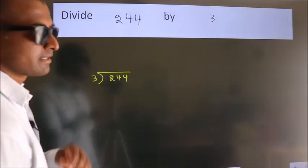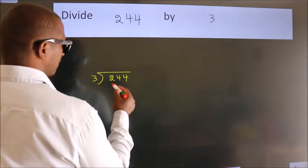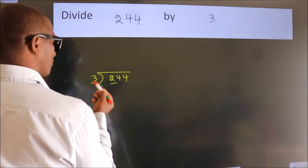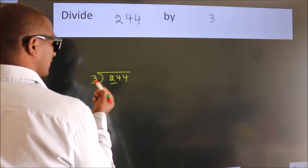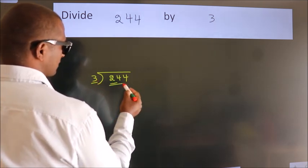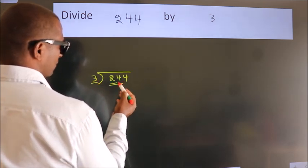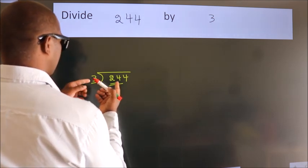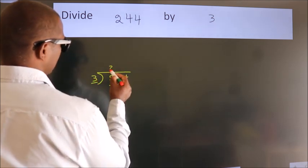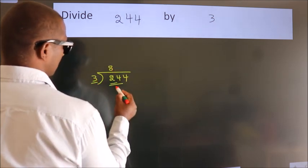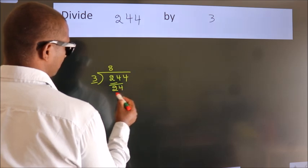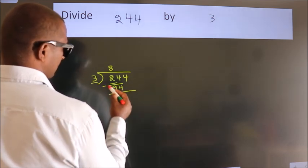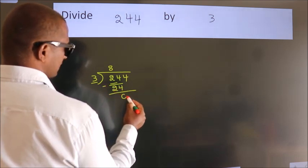Next, here we have 2, here 3. 2 is smaller than 3, so we should take 2 numbers: 24. When do we get 24? In the 3 times table, 3 eights are 24. Now we should subtract. We get 0.